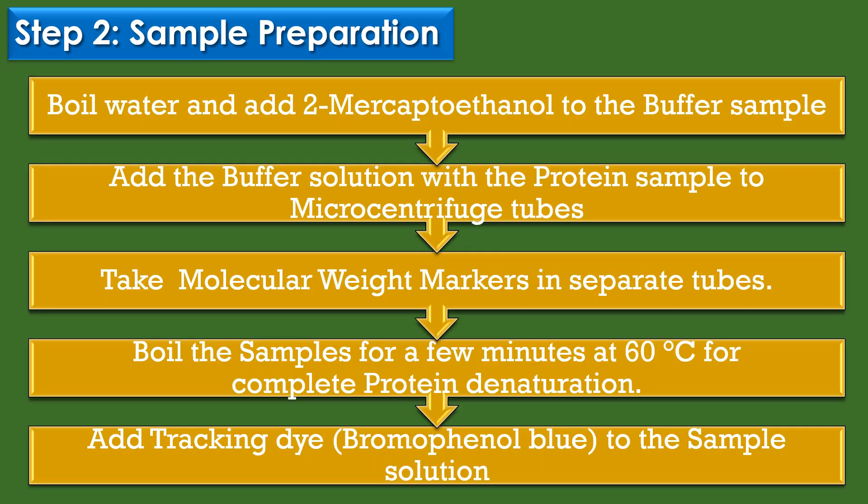The second step is sample preparation. First, boil water and add 2-mercaptoethanol to the buffer sample, then add the buffer solution with the protein sample to microcentrifuge tubes, and take molecular weight markers in separate tubes. Boil the samples for a few minutes at 60°C for complete protein denaturation, then add tracking dye or bromophenol blue to the sample solution. This has a higher electrophoretic mobility than the analytes, allowing the experimenter to track the progress of the solution through the gel during the electrophoretic run.